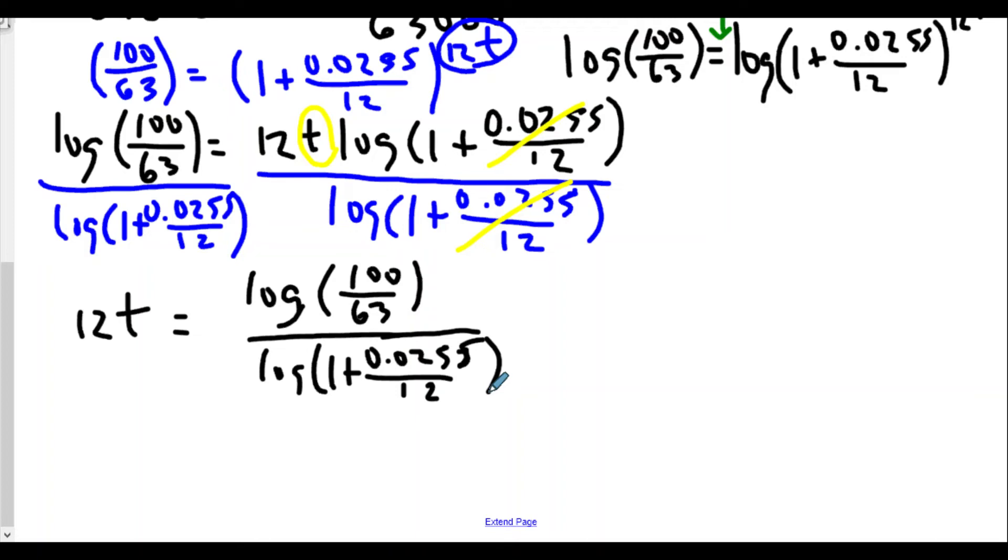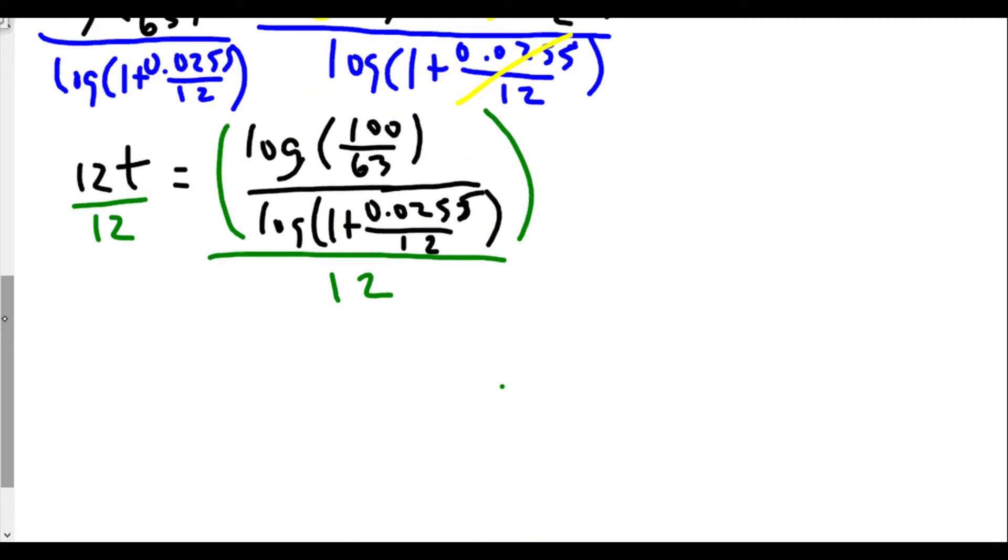But we don't want 12t, we want t, so now we're going to divide both sides again by 12. T is equal to the log of 100 over 63 divided by the log of one plus 0.0255 over 12, all divided by 12. That's what you're typing into your calculator.